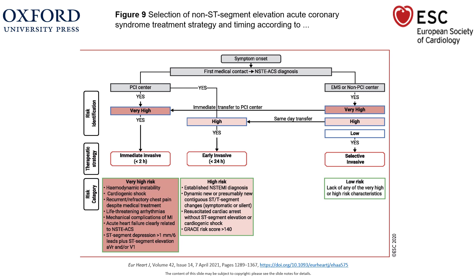This flowchart is approved by Oxford University Press and the European Society of Cardiology. Following it from the top: you have cardiac-sounding symptoms, and patients go to either a PCI centre or a non-PCI centre where they are risk stratified. The first step is risk stratification — identifying patients as very high risk, high risk, or low risk. Focusing on the PCI centre limb, we'll look at the actions and treatment strategies needed.